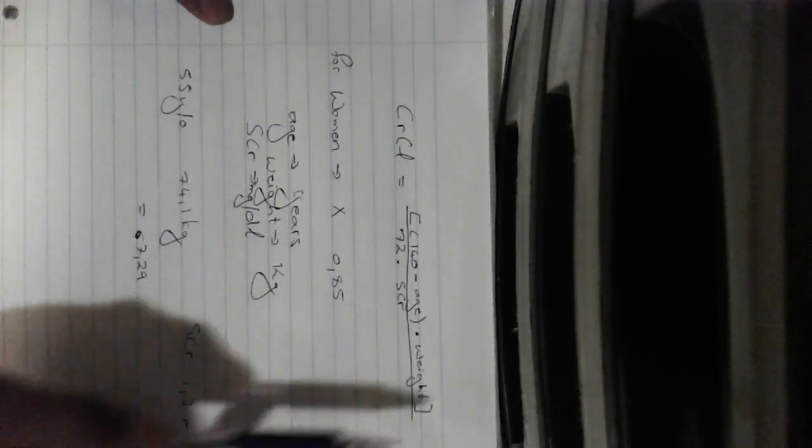SCR value, the serum creatinine value, is 1.3 milligrams per deciliter. It's already in the right units, so you just take that and you plug it in there. Plug it into your calculator and you can calculate your creatinine clearance value up to that amount. And that's all there is to it.